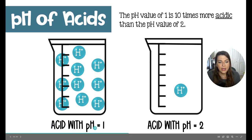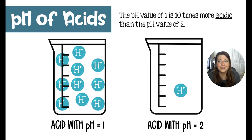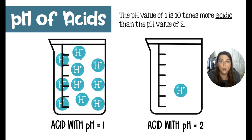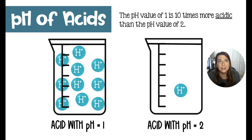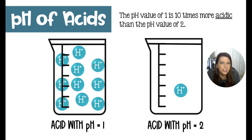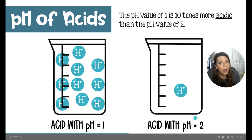Here we have a picture: an acid with a pH of 1 versus an acid with a pH of 2. It's not necessarily that these ions are this large or that they would actually be in this quantity, but here we have 10 hydrogens to 1 hydrogen ion in the pH of 1 versus 2 — it's representative of quite a few hydrogen ions. If it was 5 times more acidic, this would be a pH of 1.5 versus 2. They don't necessarily have to come in whole numbers.